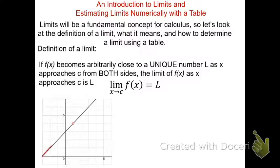As we approach 1 from the left-hand side, we see that f is getting closer and closer to 4. Notice that f is not defined — it's an open point — but as we get closer and closer from the left, the y-value is approaching 4. We write this as: the limit of f as x approaches 1 from the left equals 4, using a minus sign next to the 1.